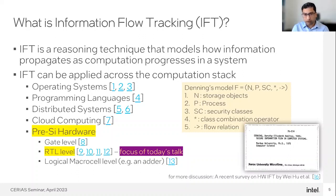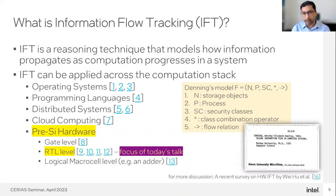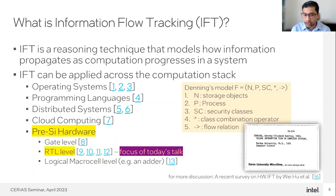The definition of information flow tracking changes based on the level of abstraction where you apply it. The problem may look a little different at the programming language or operating system level versus RTL or hardware level. But underneath all different abstractions, the fundamental idea has remained the same. We can go back to Denning's model of information flow analysis as a precursor of all formulations at any level of abstraction — and interestingly, this research was actually done at Purdue in 1975.